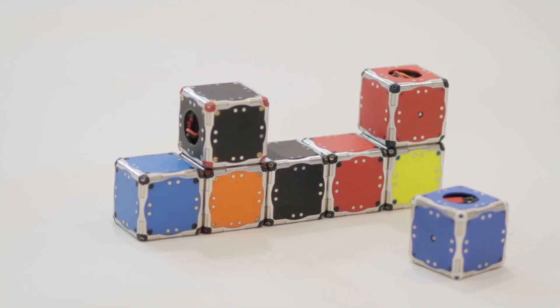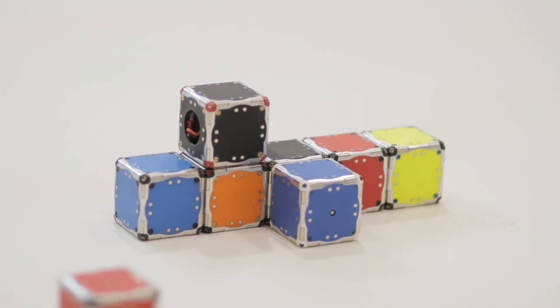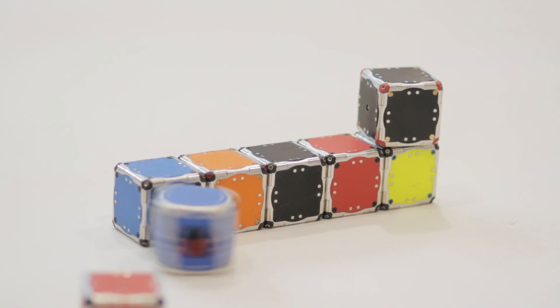However, we wanted a simpler approach that uses fewer actuators, fewer moving parts, and was easier to implement on a lot of different robots. And so the approach that we chose is to use angular momentum. And essentially what that means is there is a spinning mass that spins inside of the robot.